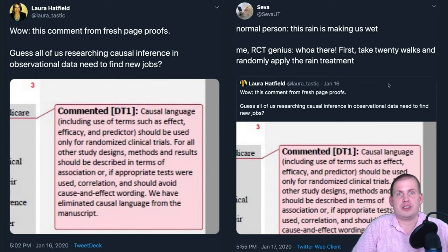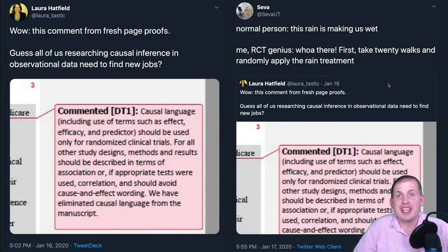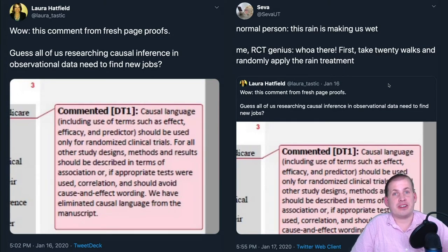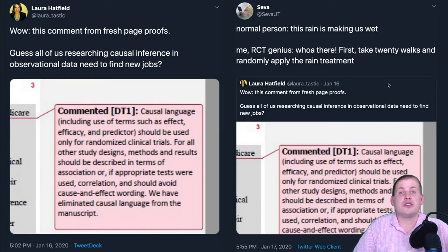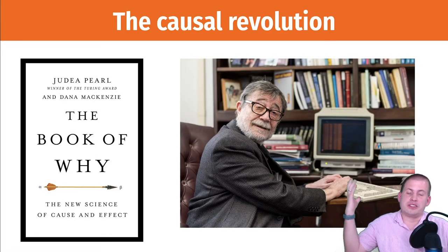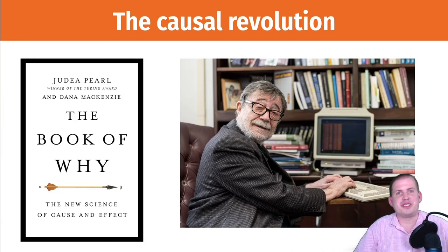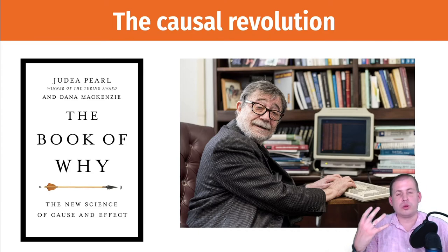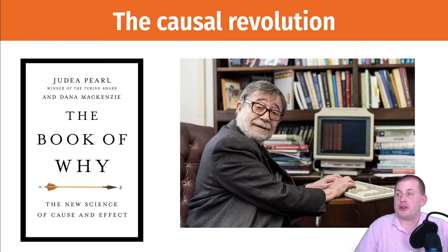We as humans are pretty good at figuring out cause and effect — that's part of what makes us successful as a species. So don't be afraid of looking at observational data and trying to figure out causation, as long as you follow specific rules. Those rules come from what is called the Causal Revolution, the idea that you can use specific logical rules to infer causation from observational data. It's based on decades of research.